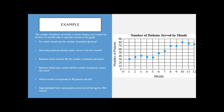Here's another example — a graph of the number of patients served by month. The horizontal axis is months one through twelve, and the vertical axis is number of patients. The description tells us it's the number of patients served by a certain hospice care center for the first 12 months after it opened, so that's the data we're looking at here.